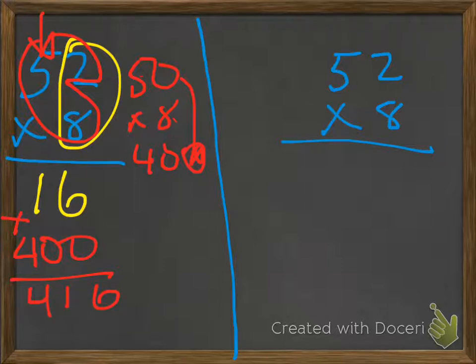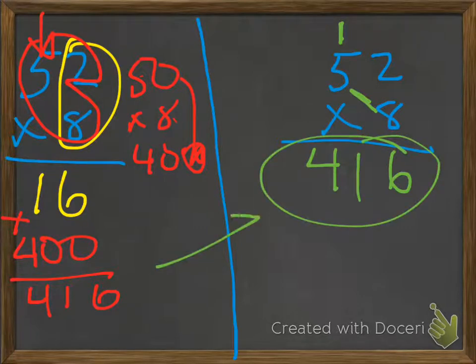So that's an easy way of solving this problem. We can go the standard way and go 2 times 8, which is 16, and put the 10 up there. We have 8 times 5 is 40, and add the 10 there. That's 41. And we get the same answer. Either way works. It just kind of depends on what is easier for you.